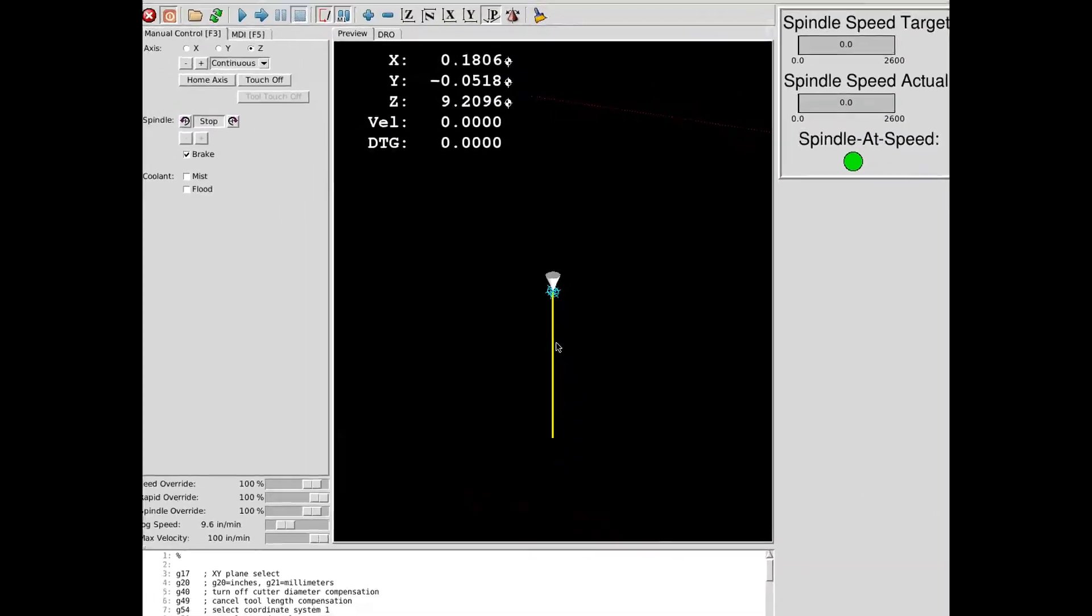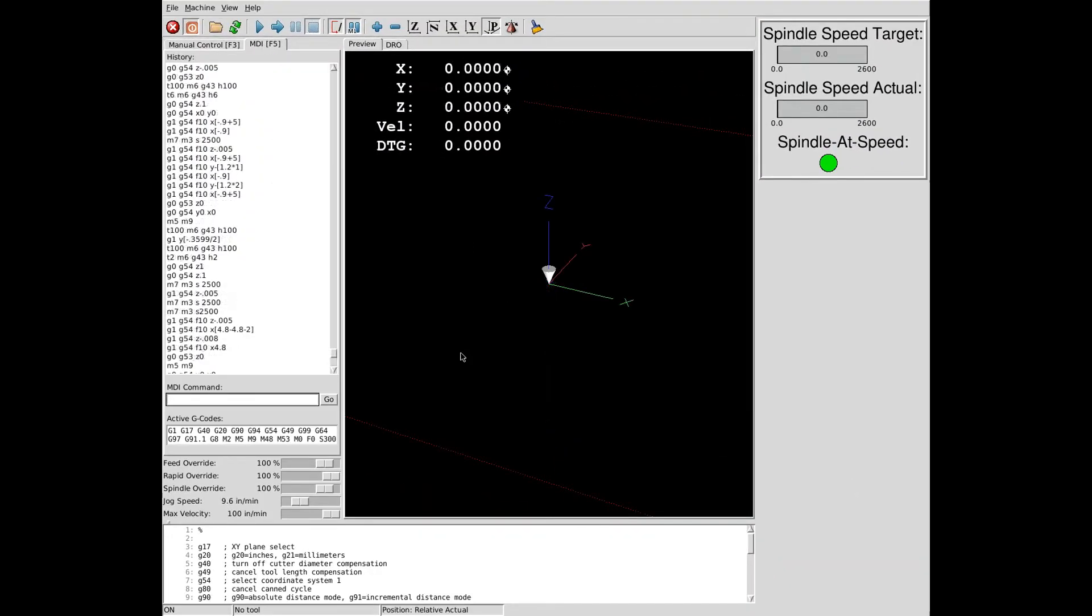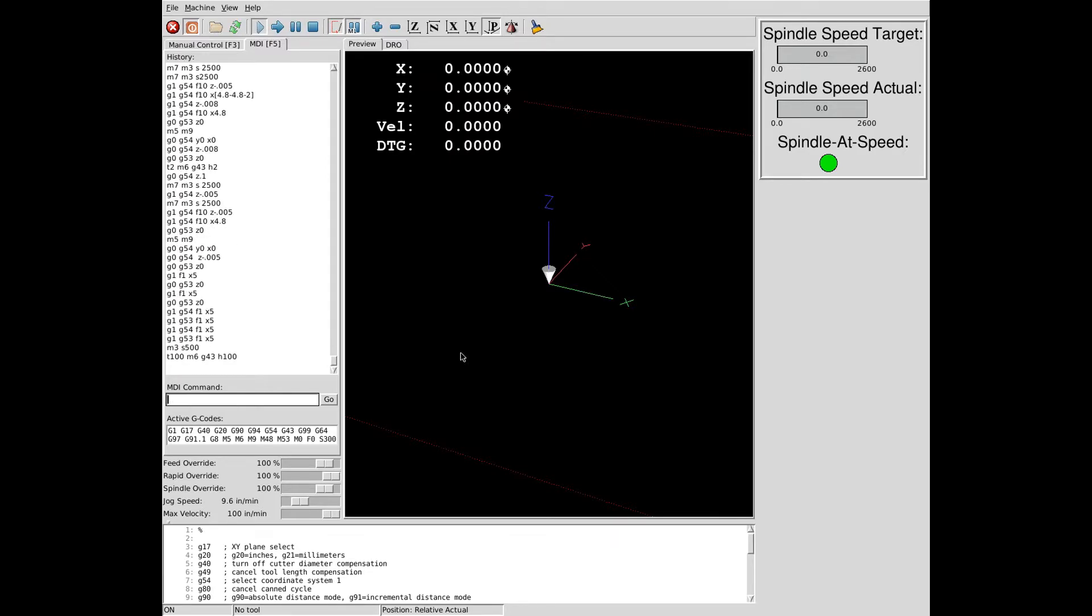And finally, select Reload Table to update the in-memory tool table. The tool table is referenced by G-code when selecting and changing the tool and when doing tool height compensation.